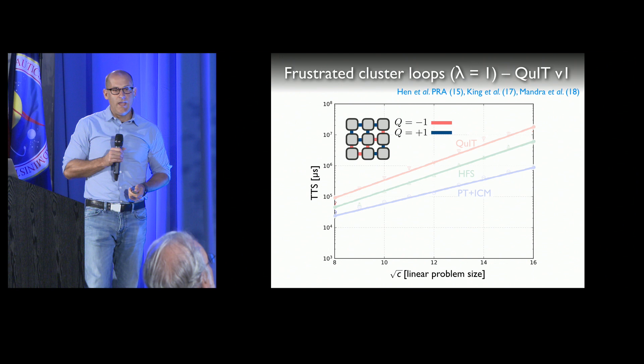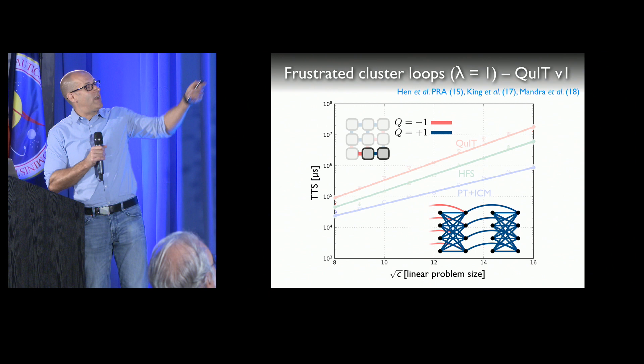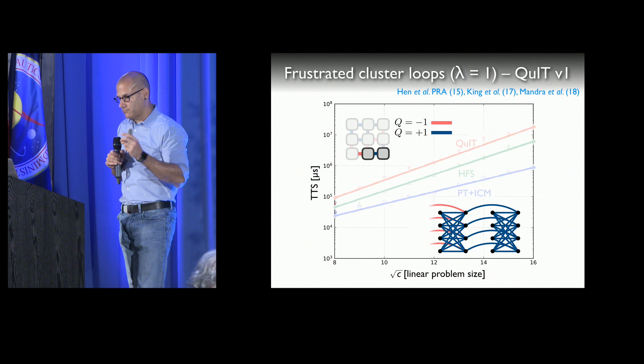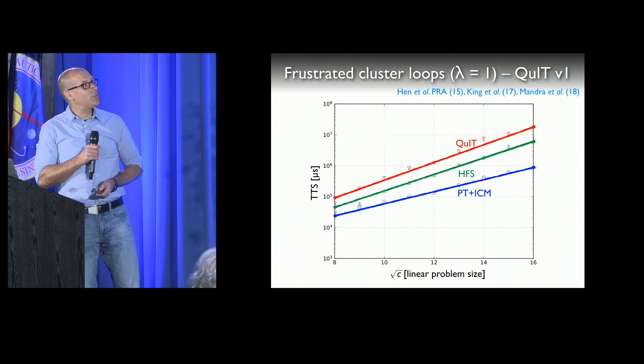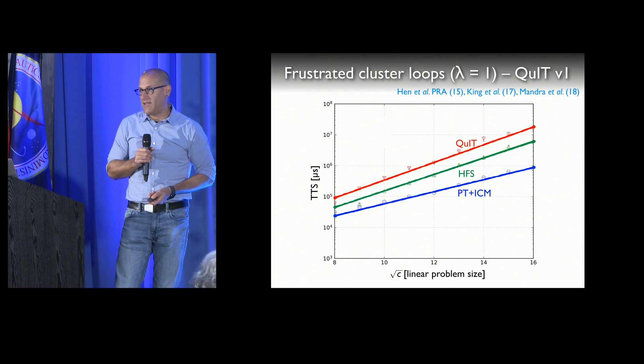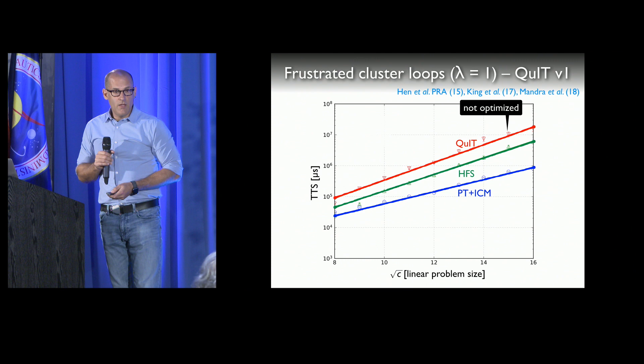How does this perform? Salvatore introduced the deceptive frustrated cluster loop problems this morning, and I'm going to use them here for a benchmark. You start with a square lattice, embed frustrated loops, take this logical problem and place it on Chimera. In our very first naive implementation, this Quantum Inspired Tempering matches the performance of HFS. It's a little less good than PT plus ICM, but in some ways that's cheating because ICM gives an additional boost. Importantly, this is not yet optimized.